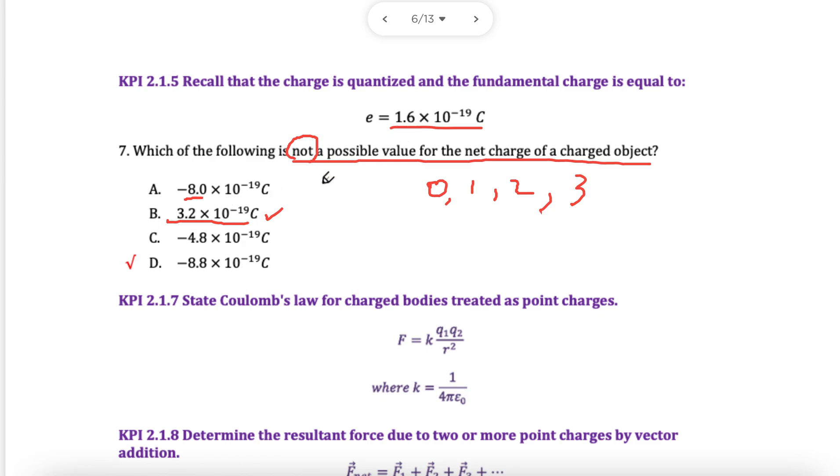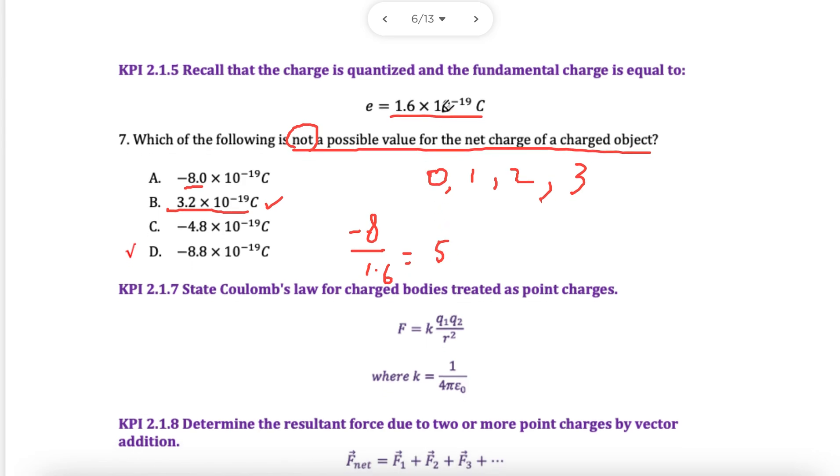Otherwise, you can just make it nice and simple. You take your number and you divide by 1.6. Take the number, divide by 1.6. If you get a decimal number, your answer is correct. Let's try it. Minus 8 divided by 1.6, you will get 5. That's 5 electrons. This is 2 electrons, that's double of 1.6. Let's check 4.8 divided by 1.6, I get 3, that's 3 electrons. If I do 8.8 divided by 1.6, that gives me 5.5. Impossible. That's 5.5 electrons. This is the one that is incorrect.